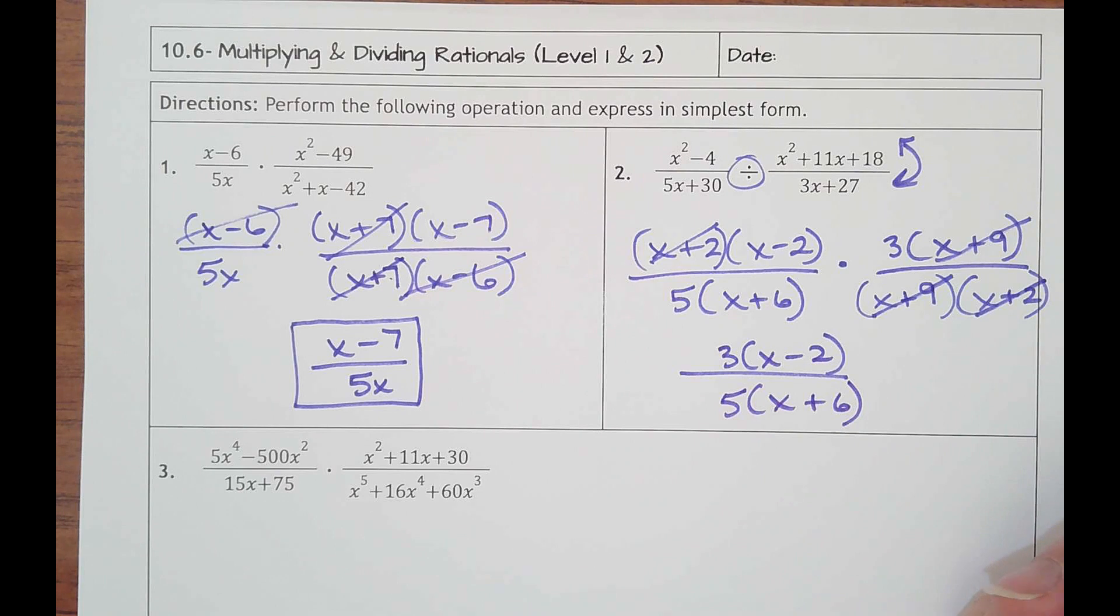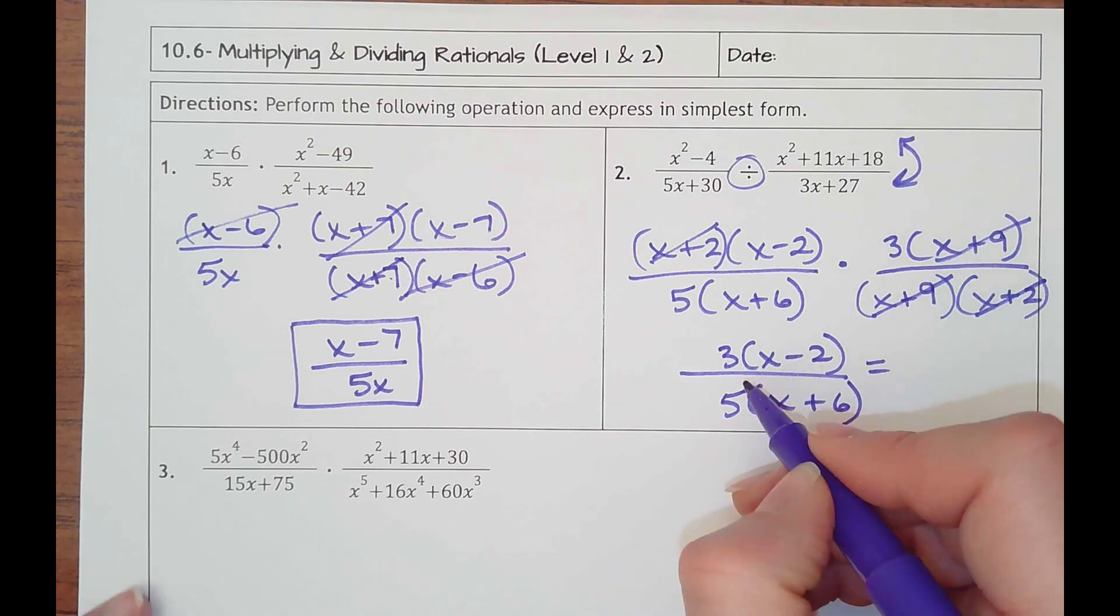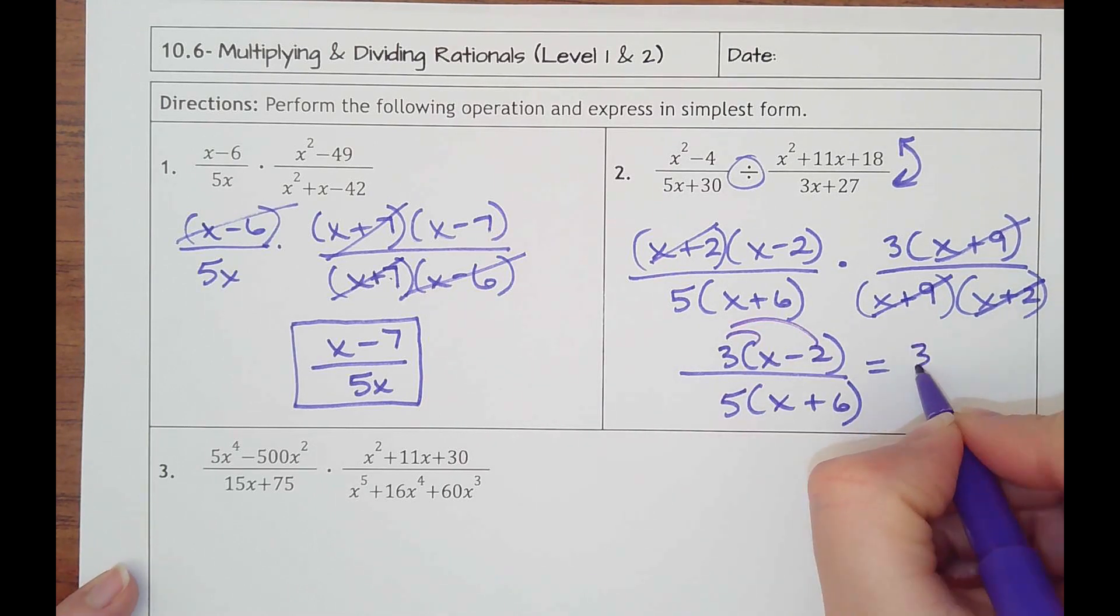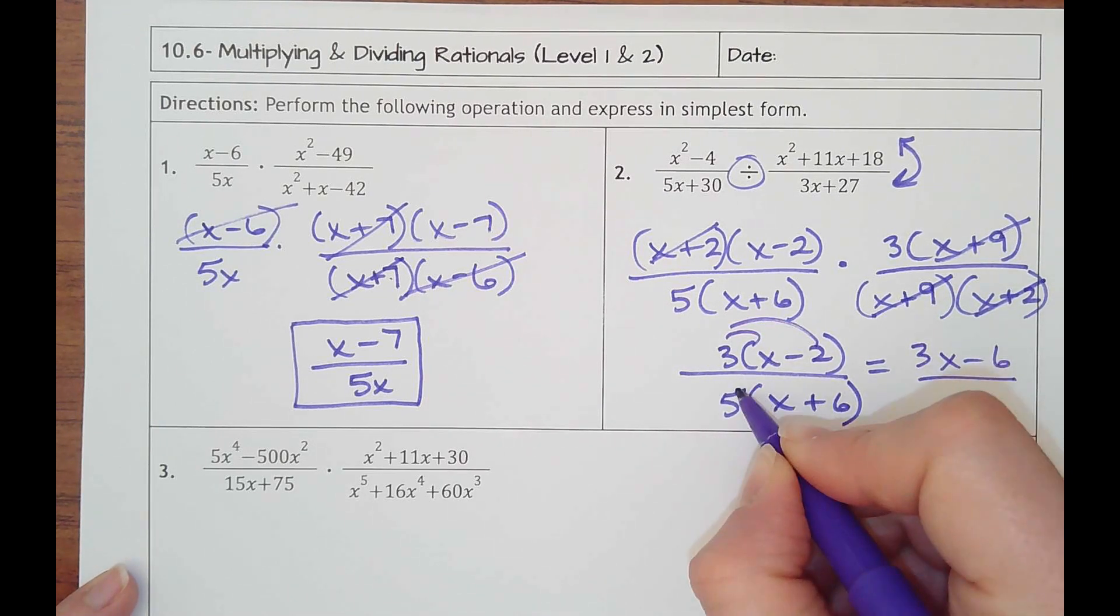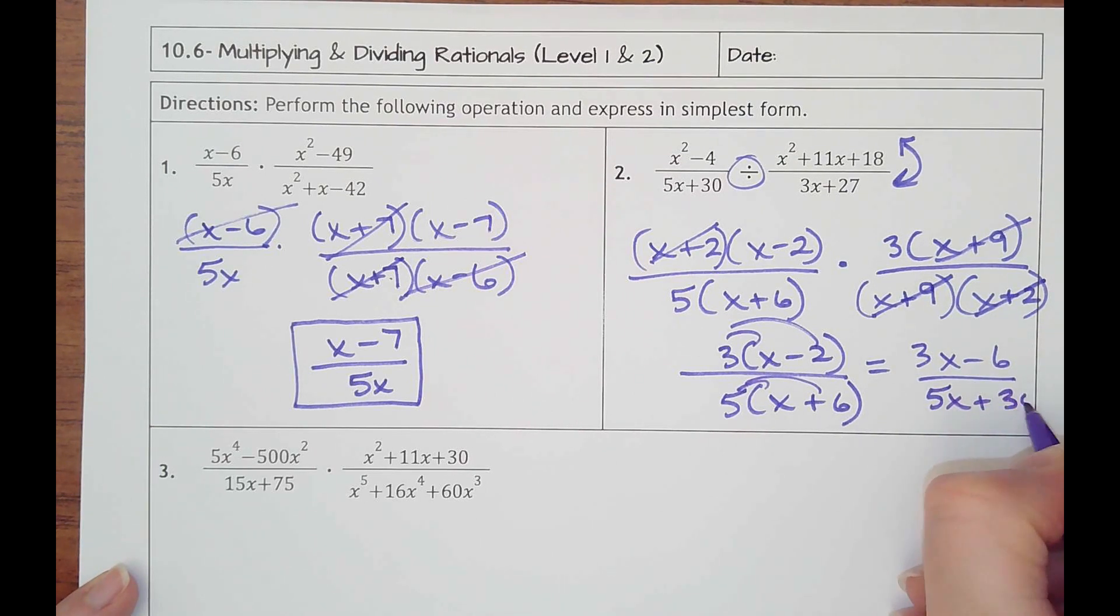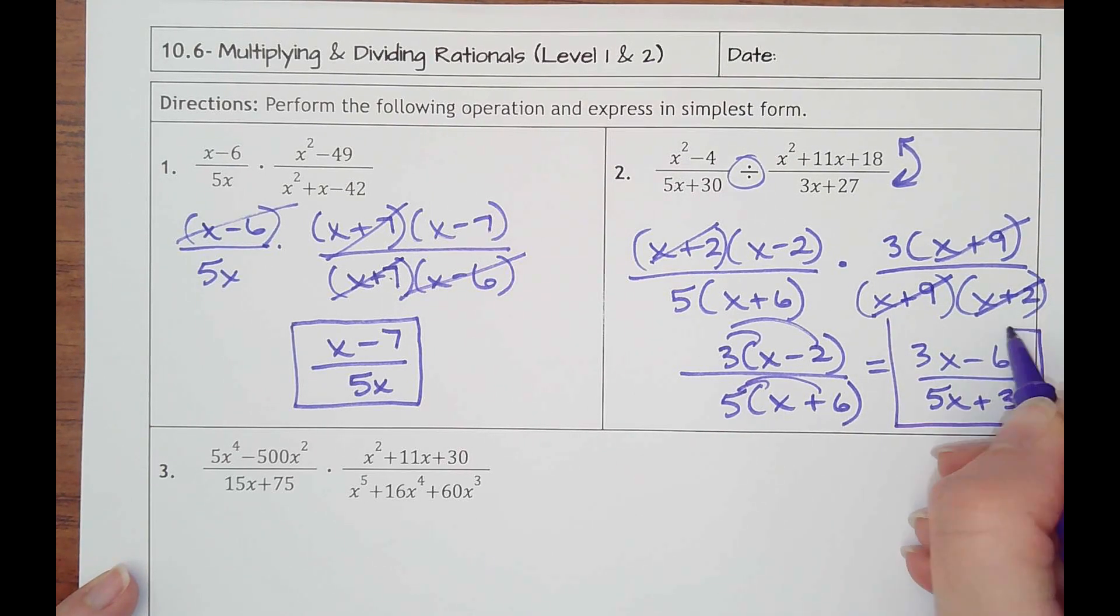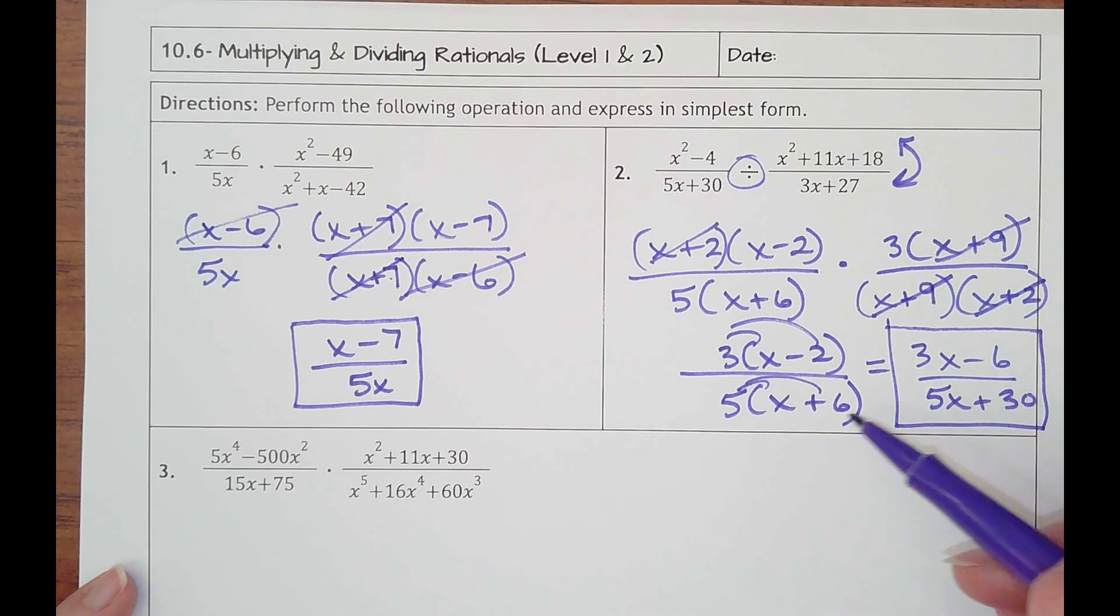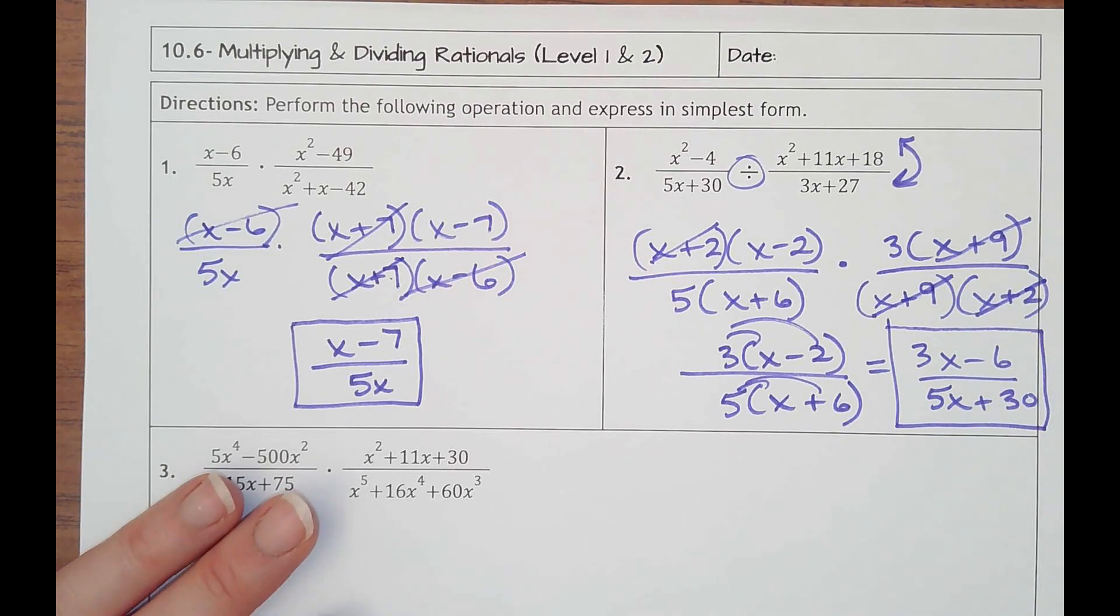Now I can't remember if it's on this one that it doesn't want parentheses. So you might have to distribute the 3 and have that be 3x minus 6 over 5x plus 30. Because normally I would be okay with either answer. I don't remember if they take both or not.